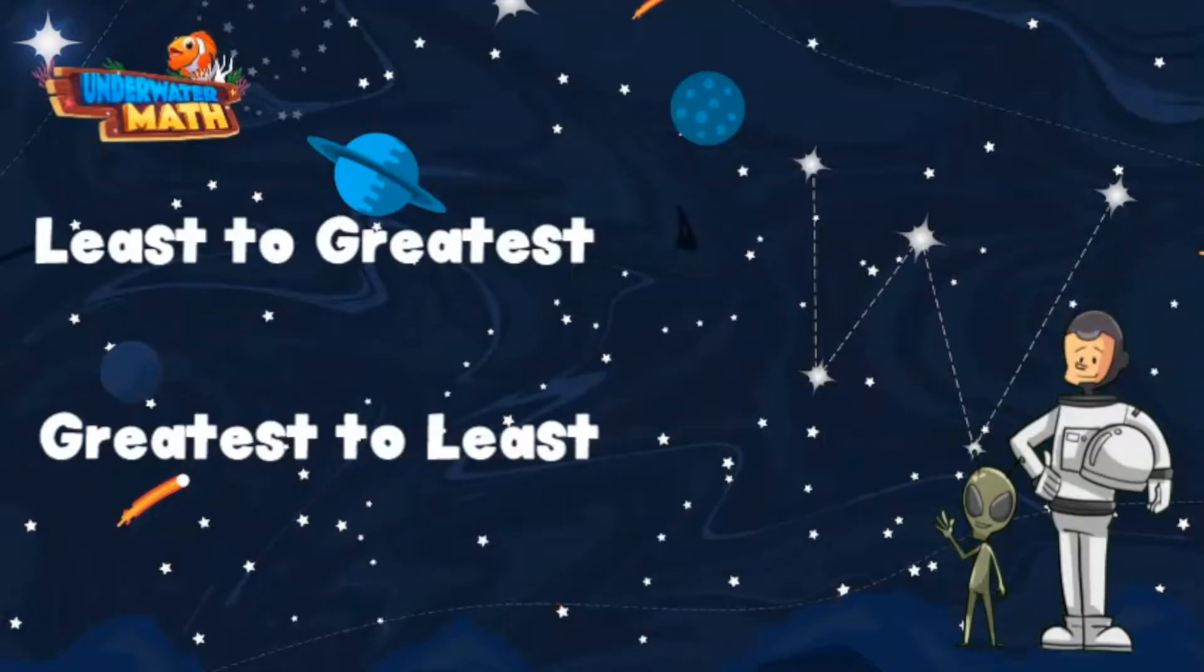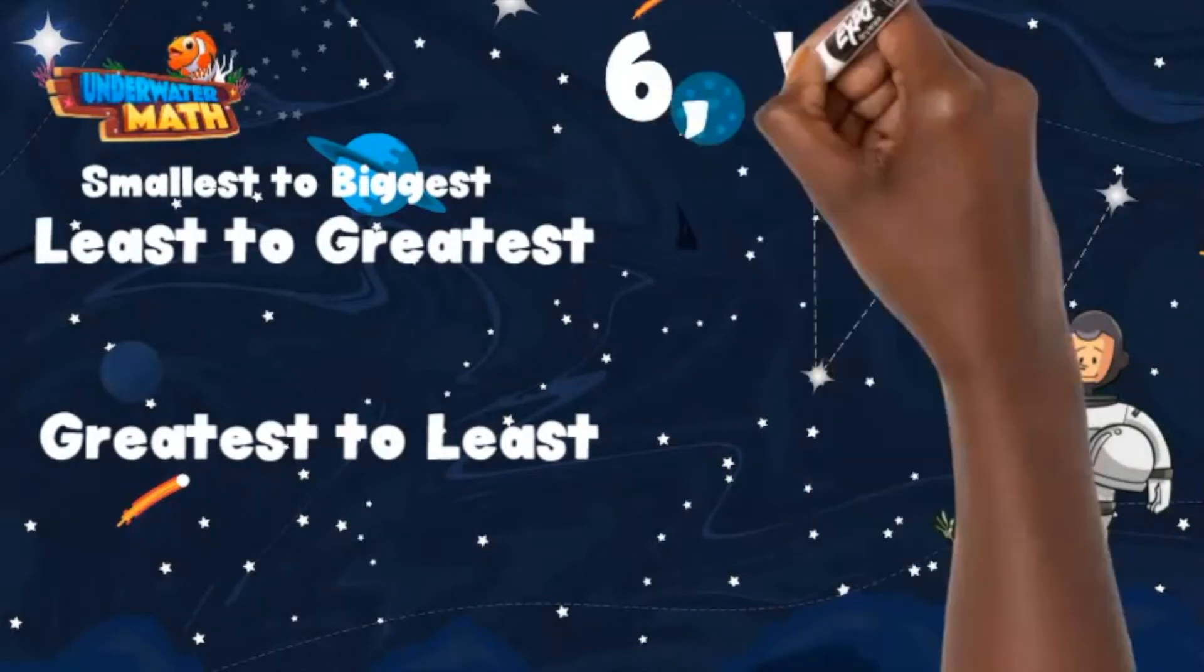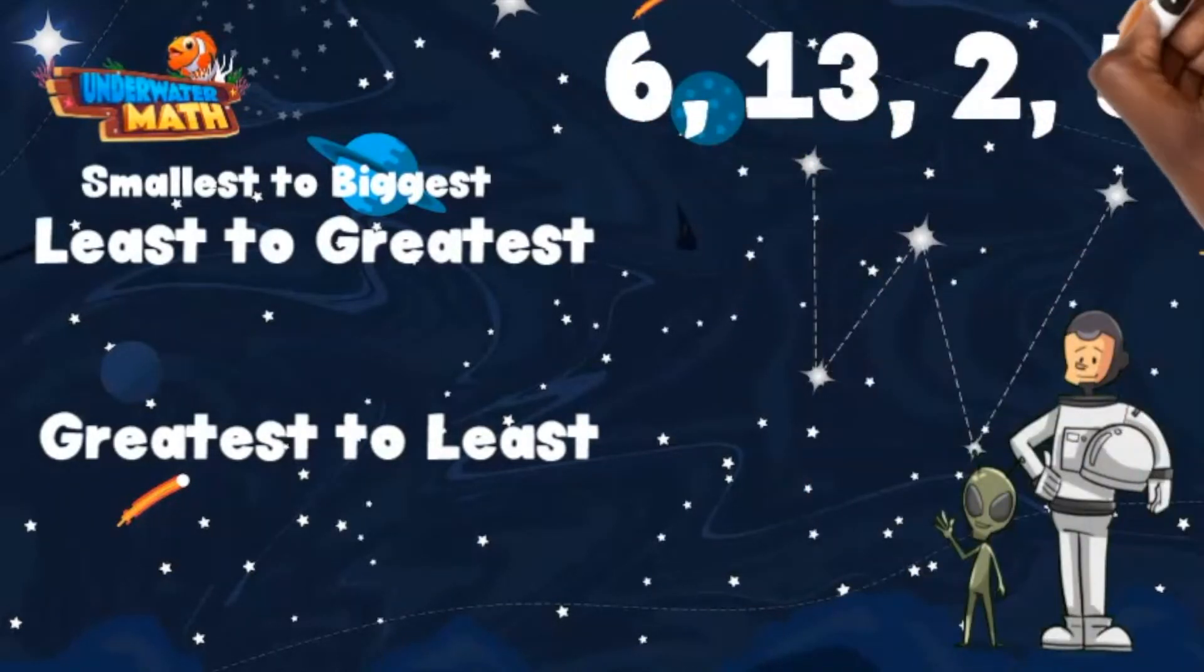Least to greatest means you need to put the numbers in order from the smallest number to the biggest number. For example, if we had the numbers 6, 13, 2, and 5 and needed to put them in order from least to greatest.